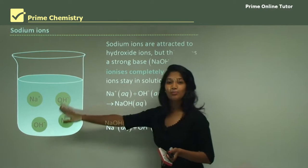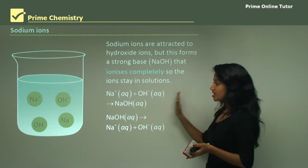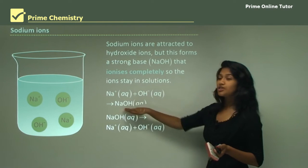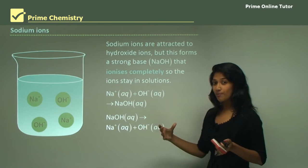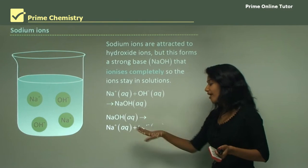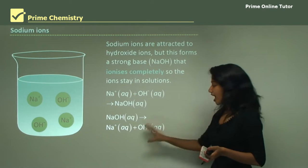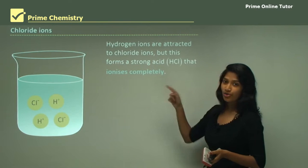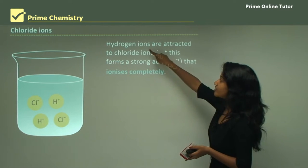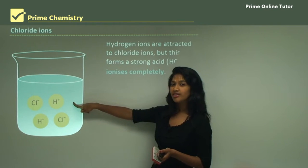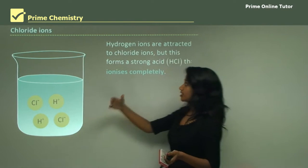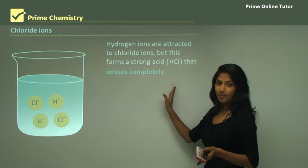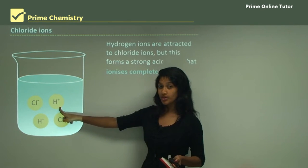Sodium hydroxide fully ionizes — 100% ionization — back into sodium ions and hydroxide ions. Meanwhile, chloride ions attract hydrogen ions from the water (since H⁺ is positive and Cl⁻ is negative), forming hydrochloric acid — a strong acid that ionizes completely again, regenerating hydrogen ions and chloride ions.